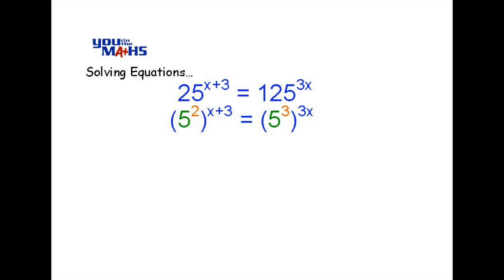So we find that the left hand side has an index of 2x plus 6. The right hand side has an index of 9x. Because the bases are the same we can equate those two indices together. Now it's a matter of solving that equation for x.